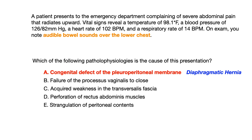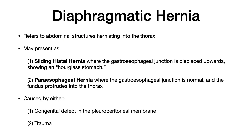A diaphragmatic hernia refers to when abdominal structures herniate upward into the thorax. This can present as a sliding hiatal hernia or a paraesophageal hernia. In a sliding hiatal hernia, the gastroesophageal junction is displaced upwards and you'll see what's known as an hourglass stomach. In a paraesophageal hernia, the gastroesophageal junction appears normal and the fundus protrudes into the thorax. The pathophysiology is either a congenital defect in the pleuroperitoneal membrane, or trauma to that local area causing the herniation.